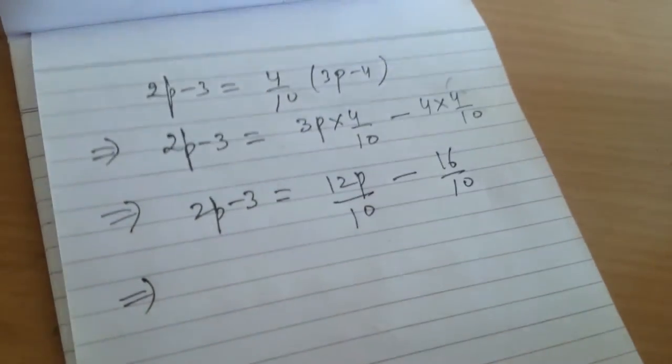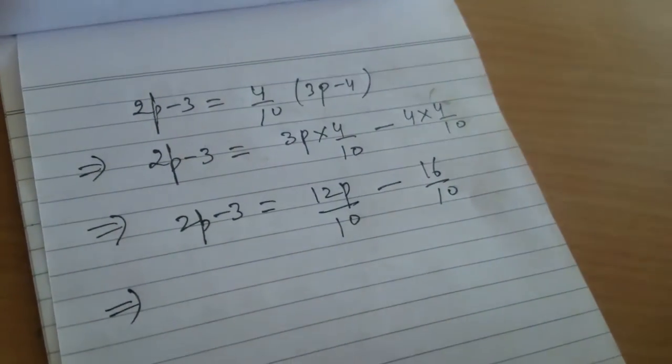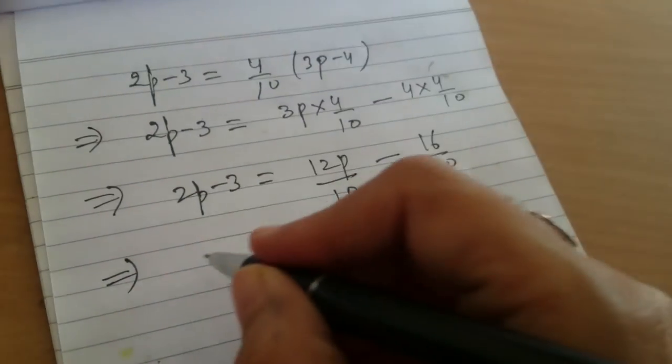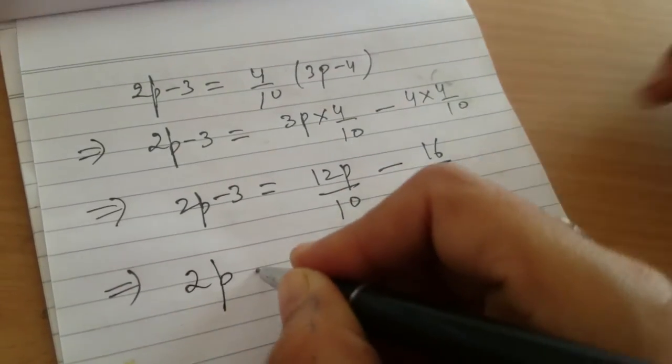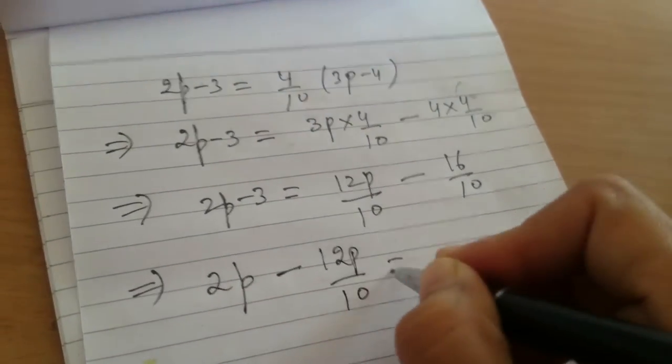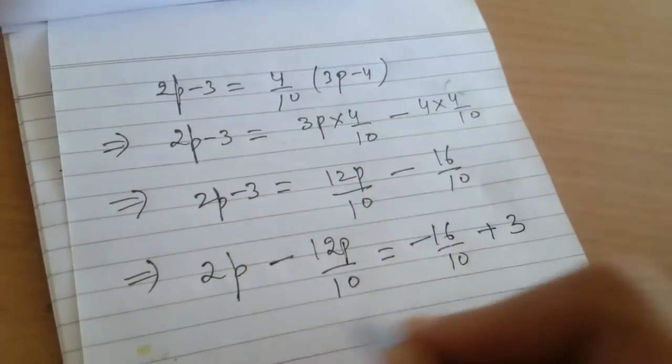What will you do now? Then we will transpose variables to one side and constants to the other side. So what will I get? 2p minus, because here is in the positive side, 12p by 10 equals to minus 16 upon 10, here is plus 3.